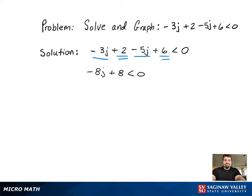Now we need to get the constants on one side and variables to the other. That's why we subtract 8.